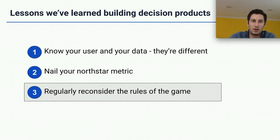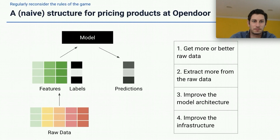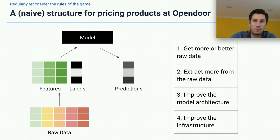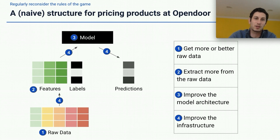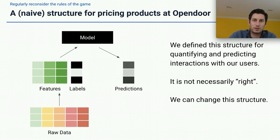The third and final lesson revolves around regularly reconsidering the rules of the game — how we actually use our decision products to interact with users. For a very long time, we thought about our offer pricing products with a roadmap framework for improvement in four ways: get more or better raw data, extract more from the raw data, improve the model architecture, or improve the infrastructure. We thought this was mutually exclusive and completely exhaustive — covering any possible way of improving the decision product and the user experience. But we had forgotten that we defined this structure ourselves, it's not inherently right, and we can actually change it.